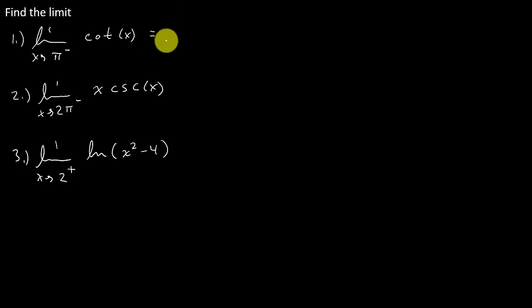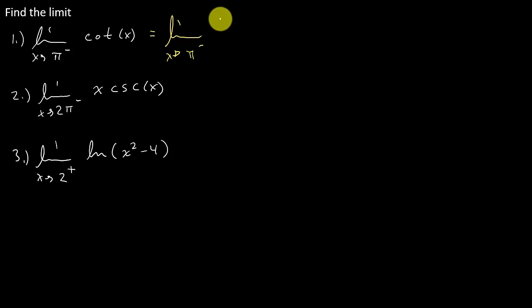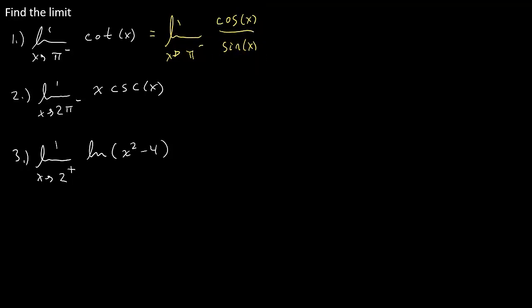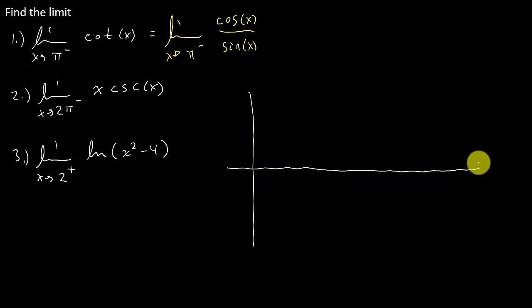We know that this is the limit as x goes to pi from the left. And remember, cotangent is cosine over sine. So what I want to do here is graph sine and cosine on the same coordinate axis.